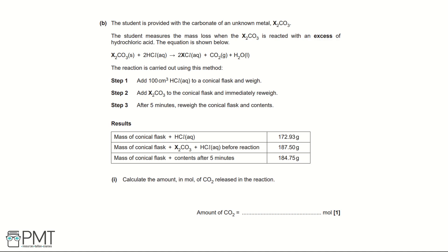Part B: The student is provided with the carbonate of an unknown metal, X₂CO₃. The student measures the mass lost when X₂CO₃ is reacted with an excess of hydrochloric acid. Step 1: add 100 cm³ of HCl to a conical flask and weigh. Step 2: add X₂CO₃ and immediately re-weigh. Step 3: after five minutes, re-weigh the conical flask and contents.